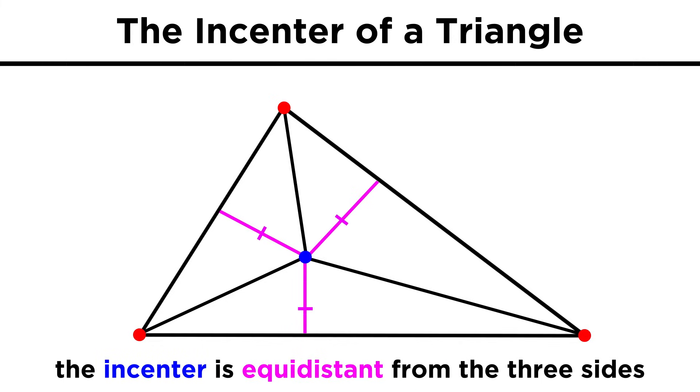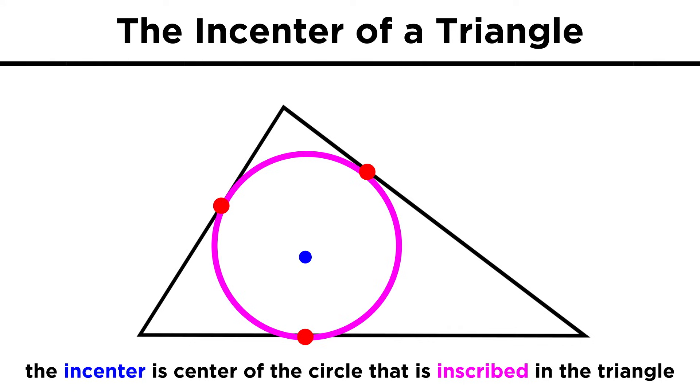The in-center will be equidistant from the sides of the triangle, so these three lengths must be the same. The in-center will be the center of the circle that is inscribed in the triangle, which is the circle that intersects each side of the triangle at precisely one point.